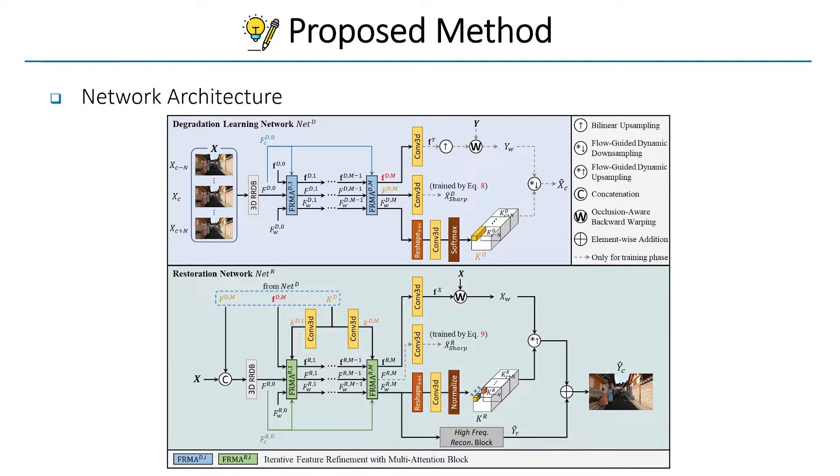This is our full network design, containing a degradation learning network at the top and a restoration network at the bottom. Both networks are composed of the proposed iterative feature refinement with multi-attention block and flow-guided dynamic filtering, predicting spatio-temporally variant motion-aware kernels.